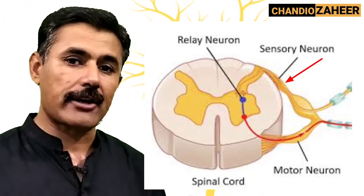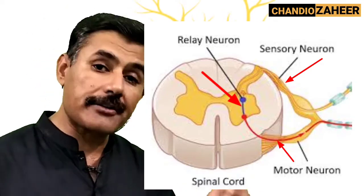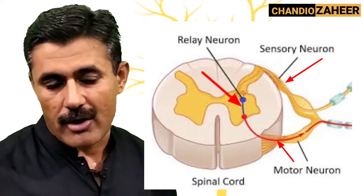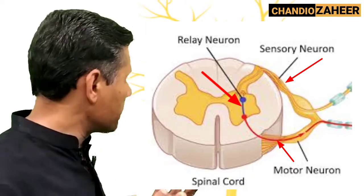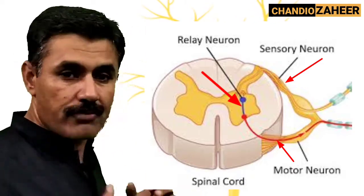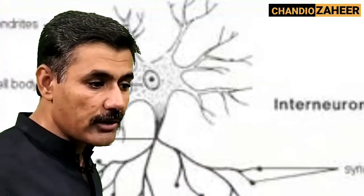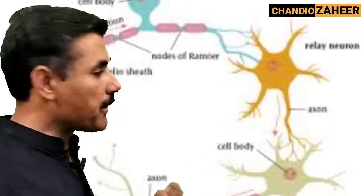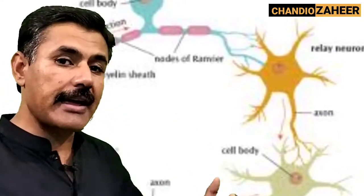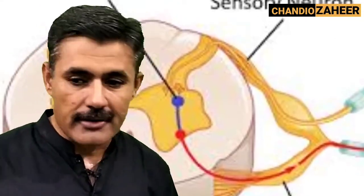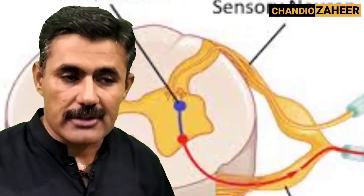The inter-neuron conducts that impulse to a motor neuron, and the motor neuron leads to an effector. The effector takes the decision and the function takes place. In this way, inter-neurons or relay neurons are present in the spinal cord where they relay information from sensory neurons to motor neurons to perform functions.